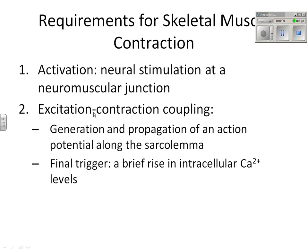The second thing that must happen is what we call excitation-contraction coupling. In here, two things occur: we must have depolarization of the muscle cell, which means we have to understand how action potentials work, and we must have calcium. So really there are three things that go on for a muscle to contract: we're going to release something from our nerve, depolarize our muscle cell, and raise the level of calcium inside of our muscle cell.